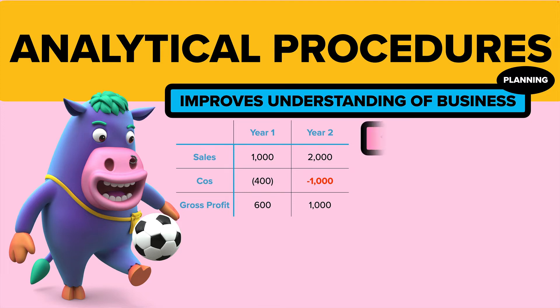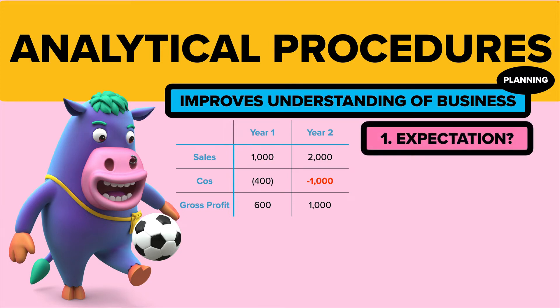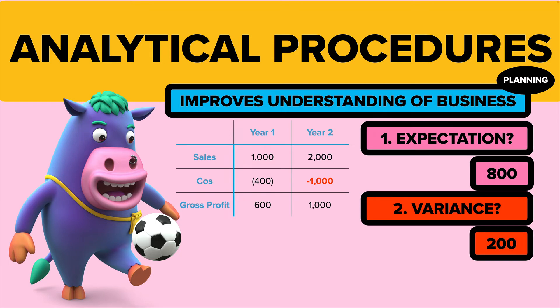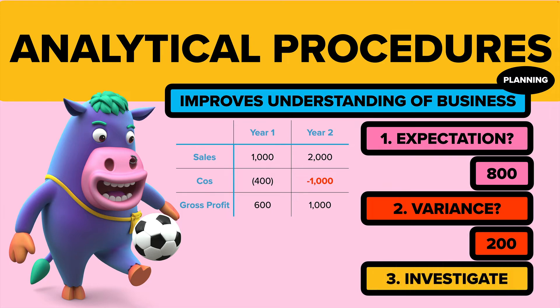So just to remind yourselves, how do we do it? First of all, we work out the expectation — we worked out the cost of sales should be 800. Then we say, how much is the variance? It's 200. Now we need to go and see why there's a variance. There might be a completely legitimate reason, and that's fine. We just need evidence to go and say we looked into the 200, the reason is X, Y, Z, we've got evidence for it. Everybody's happy — I can give a clean audit report.